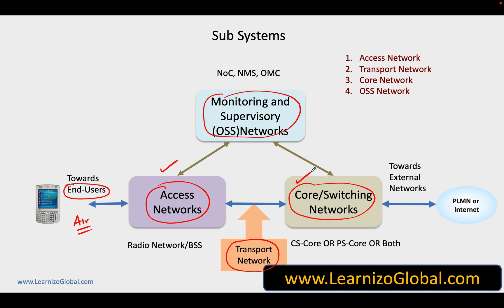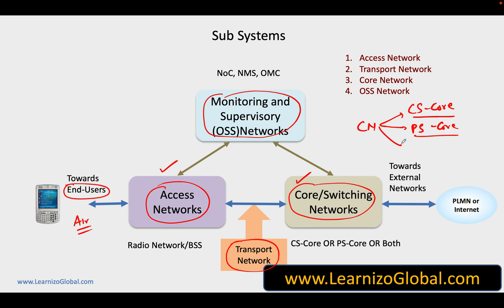The services are provided by core and switching networks. Typically you can break down these core and switching networks into three parts: CS core networks providing circuit switching services like voice, PS core networks which are typically providing data services like internet, and the third one being some kind of databases which are common for both circuit core and packet core networks.